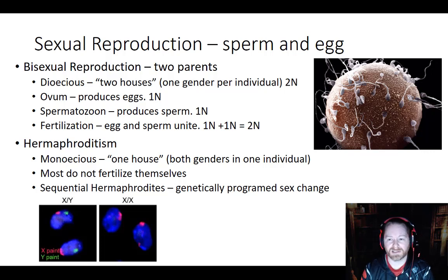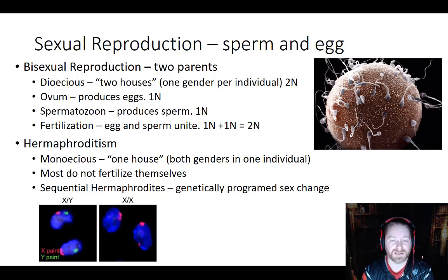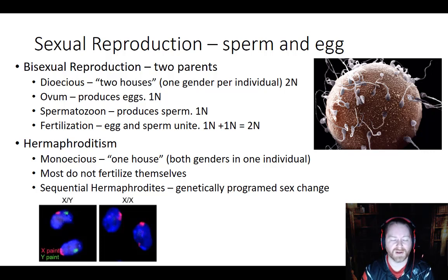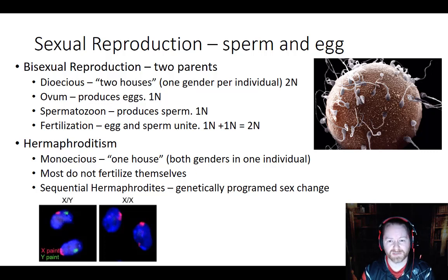In contrast to bisexual reproduction, we also have hermaphroditism. This is not what most students think — many assume these organisms can fertilize themselves, but that is the number one no-no in genetics. The first rule is to spread the genes apart; you don't want closely related individuals reproducing because you want greater genetic diversity. So with hermaphroditism, they do not fertilize themselves. They are what we call monoecious — the scientific term for hermaphrodite — meaning one house. Both genders are found in one body; they are both male and female.